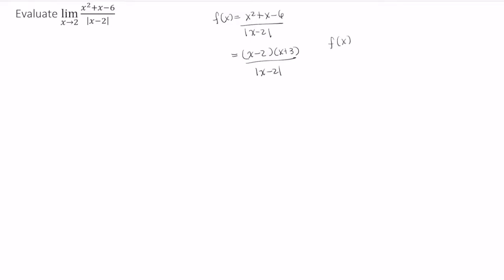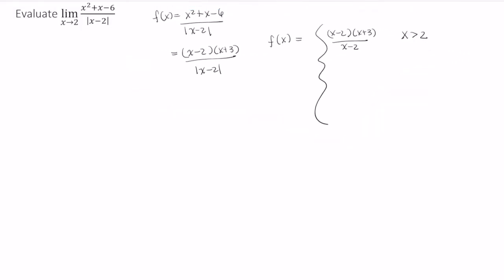Now I can rewrite this as a piecewise function. And so let's start off with the case that x is greater than positive 2. When x is greater than positive 2, we have x minus 2 times x plus 3 divided by x minus 2. And I'm going to shift everything before I run out of space. So this is just equal to x plus 3.